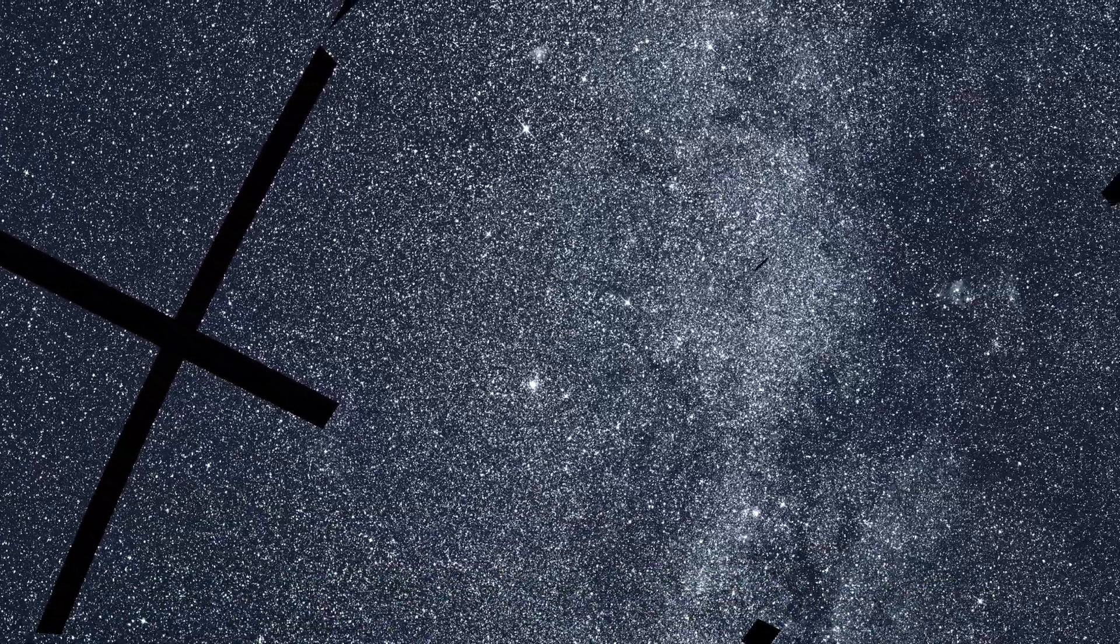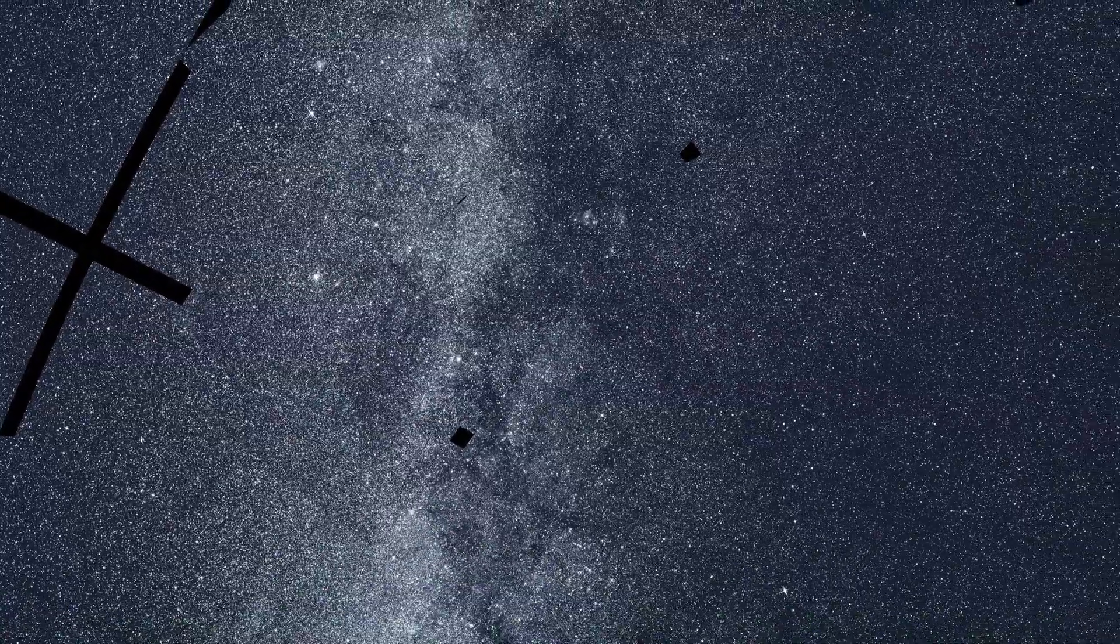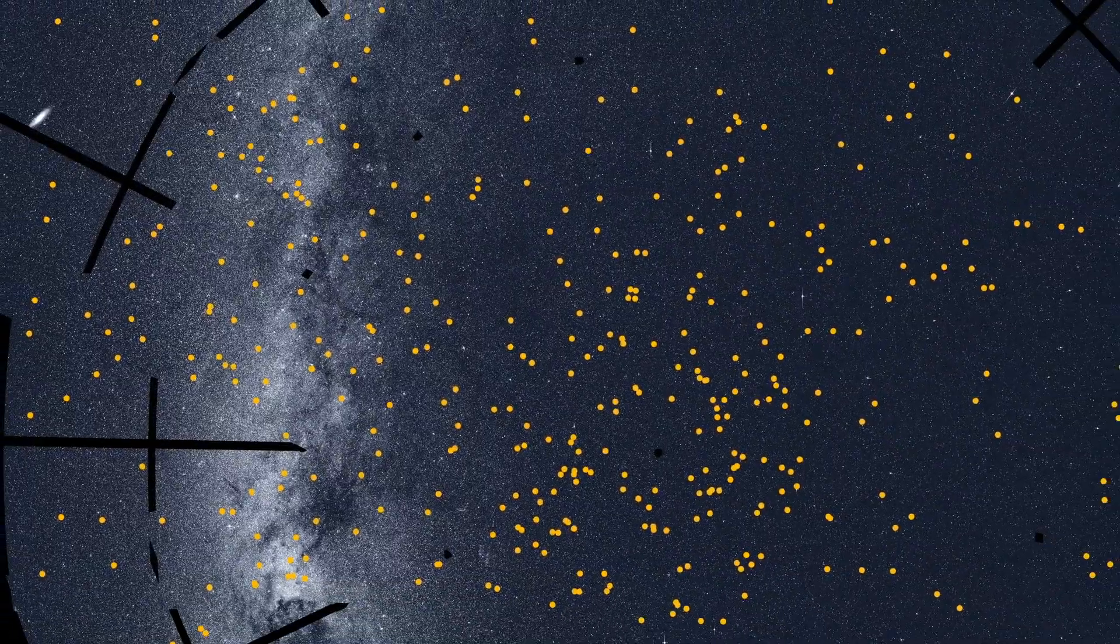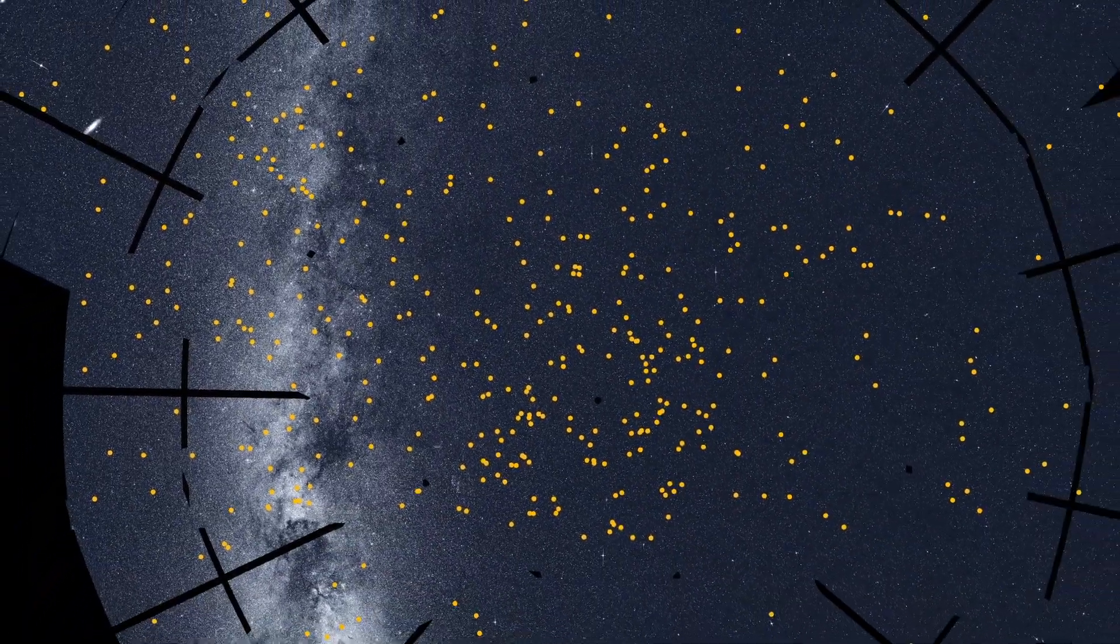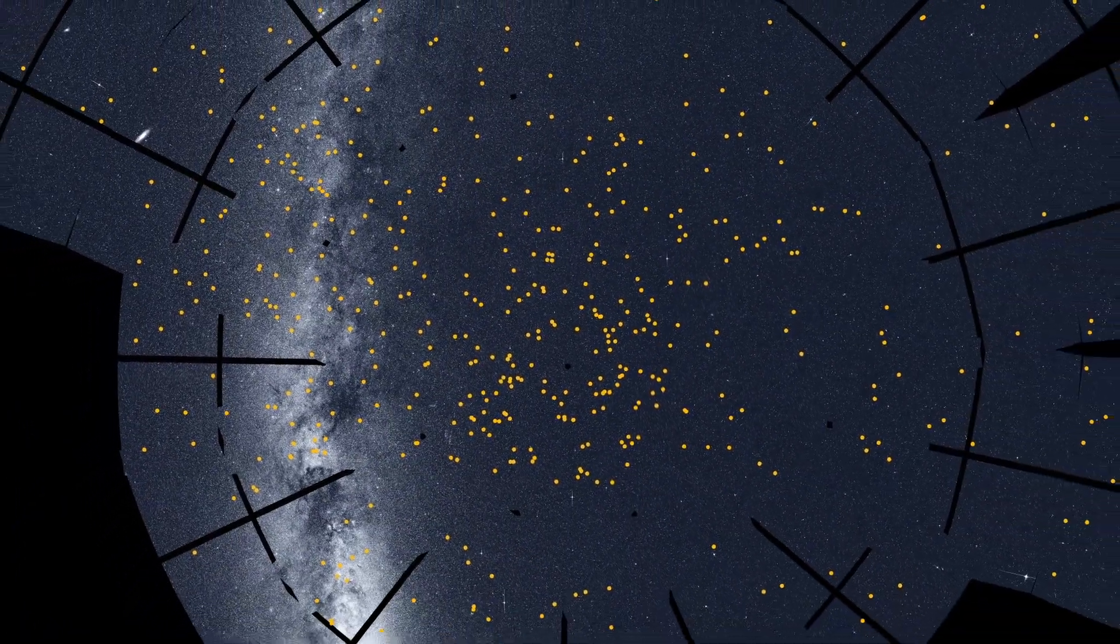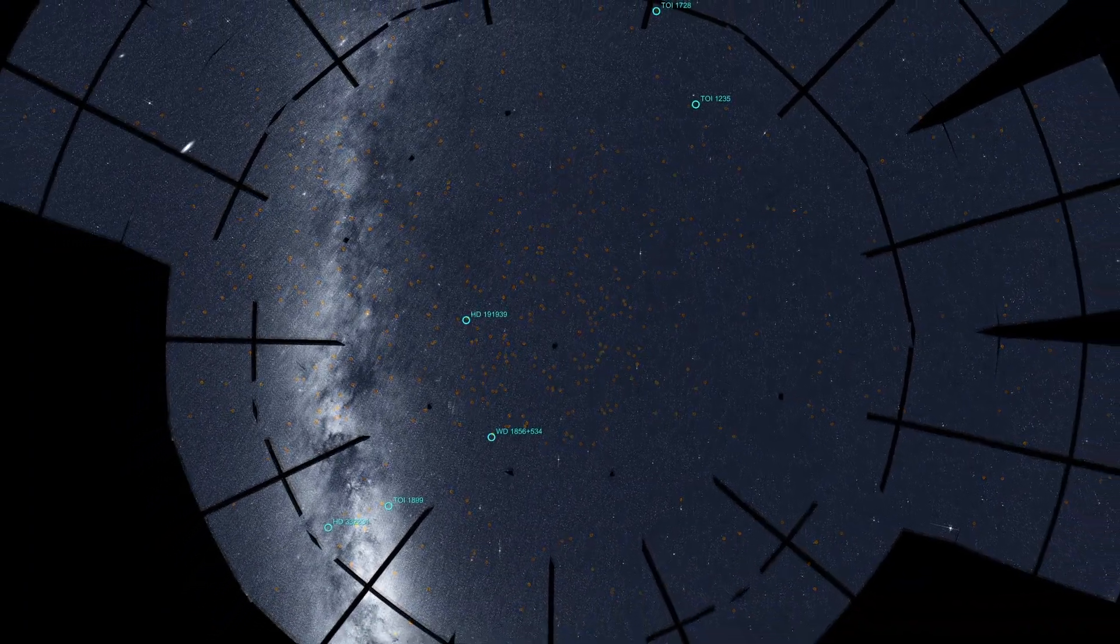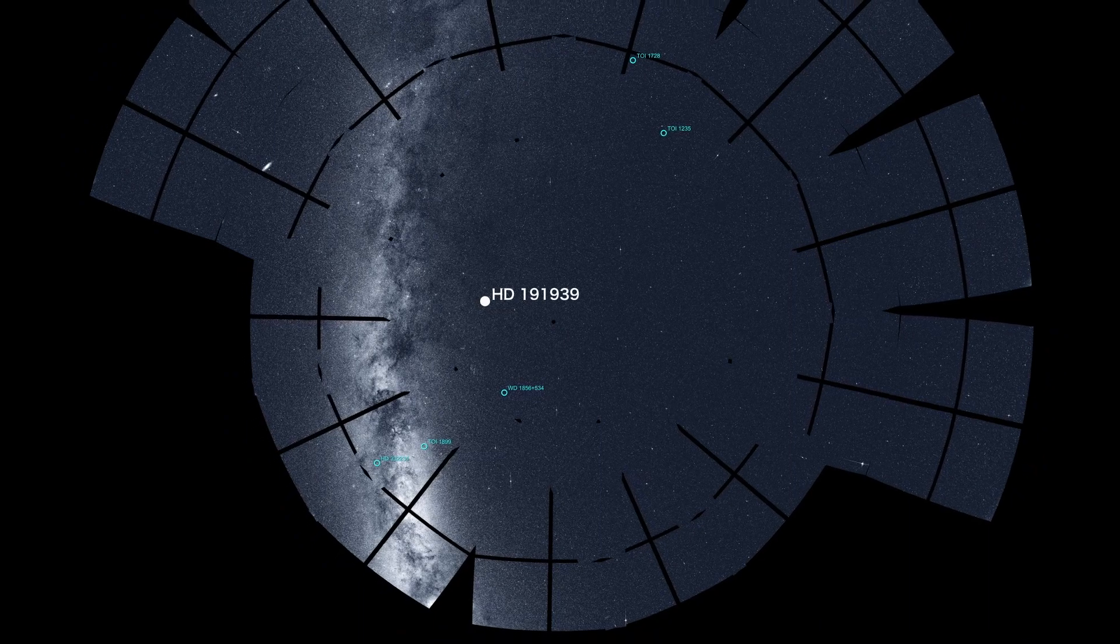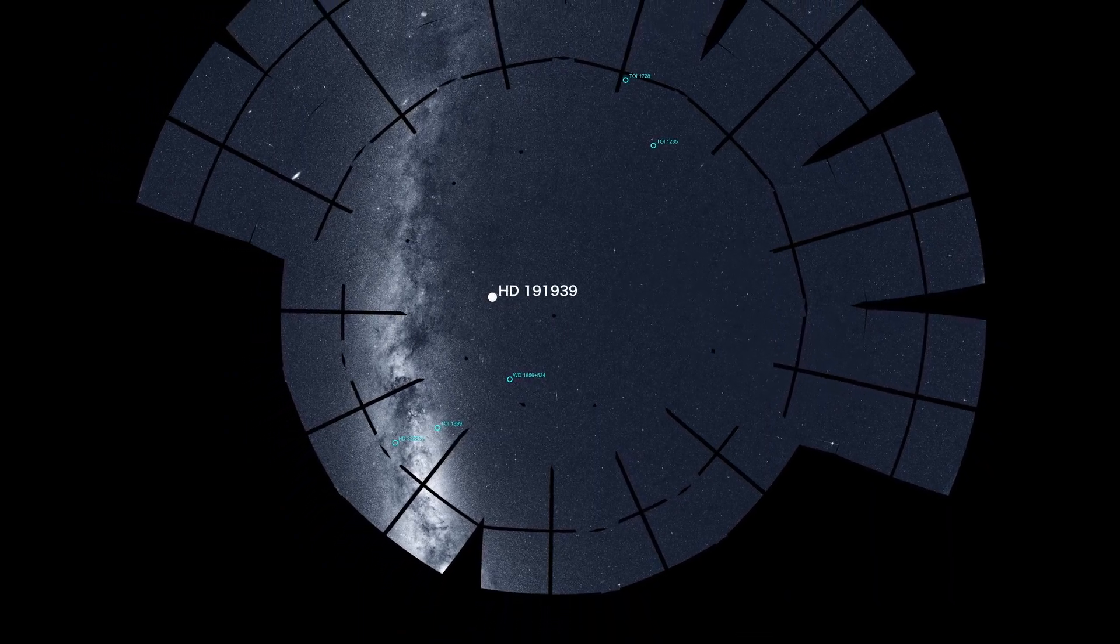Astronomers have just begun sifting through the torrent of TESS data, and are working to confirm planets among the thousands of candidates identified by the mission so far. TESS has already found a few northern stars hosting planets. One, named HD191939, possesses a trio of Neptune-size worlds.